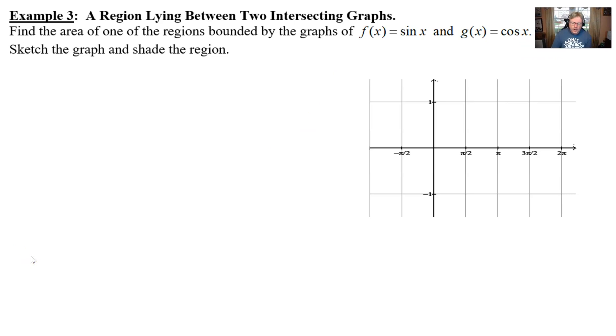The problem reads: find the area of one of the regions bounded by the graphs of f(x) = sin x and g(x) = cos x. As always, sketch the graph and shade the region.